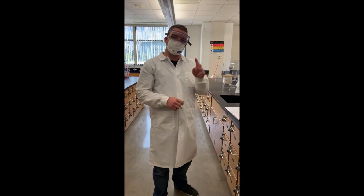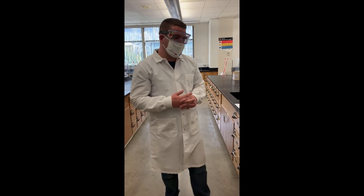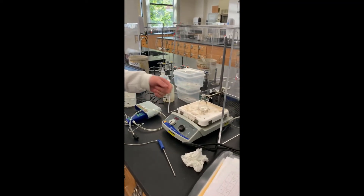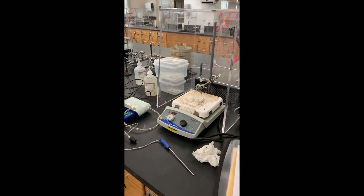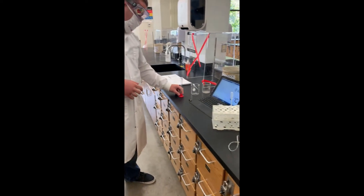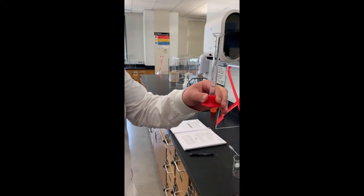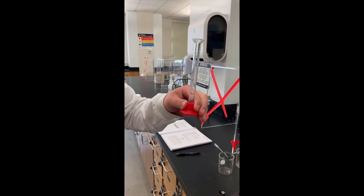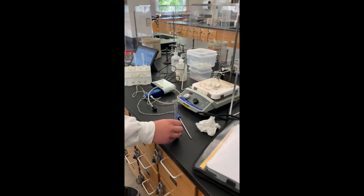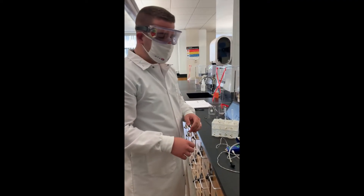I'm going to do three sample trials for you today. I'm first going to start with a standard trial. So far I have six milliliters of water in here and I also have one milliliter of hydrogen peroxide. In my graduated cylinder here I have about three milliliters of the catalase solution. So we're going to run this first trial and see what kind of pressure readings we get.